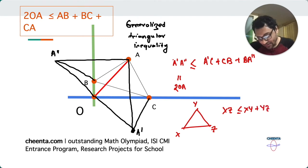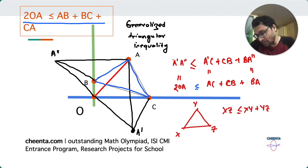So that's the triangular inequality. You can think about this as a quadrilateral version of the triangular inequality. Like the generalized triangular inequality. So this is definitely true. And as we have said earlier, A'C is equivalent to AC. And BA'' is equivalent to BA. So we now have that twice of OA is less than or equal to the perimeter of this particular triangle, which is exactly what we wanted.